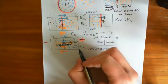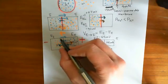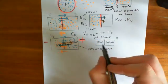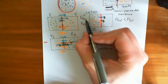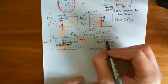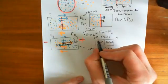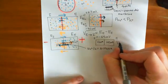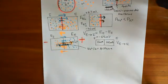The Goldman-Hodgkin-Katz constant field equation tells you something different: it tells you what voltage you need to have in order for there to be no net movement of charge, whereas the Nernst potentials are the voltages you would need for no net movement of individual ions like sodium or potassium. When we talk about voltages across cell membranes, we always mean the electrical potential difference from the intracellular compartment to the extracellular compartment.